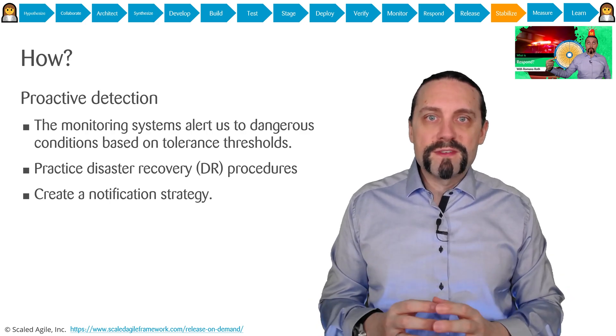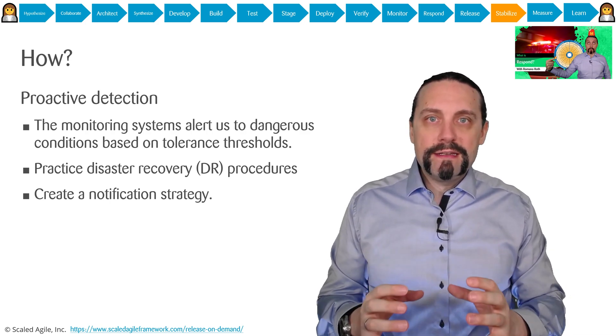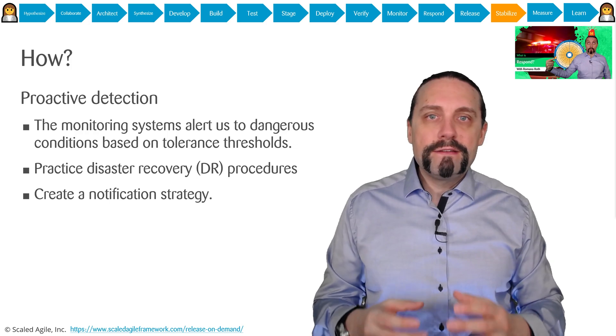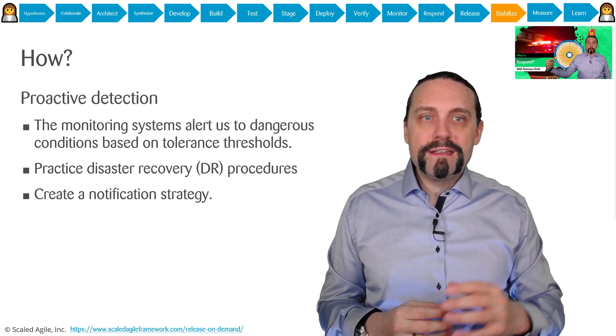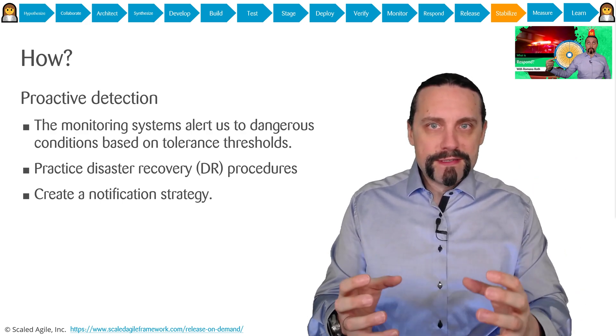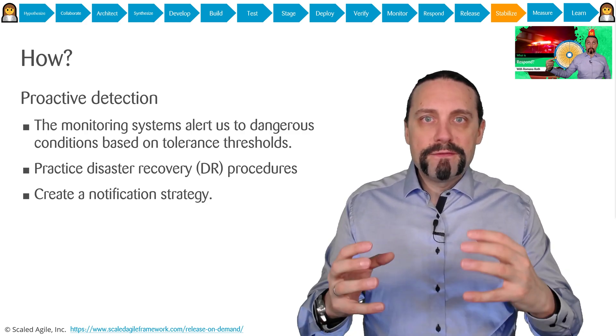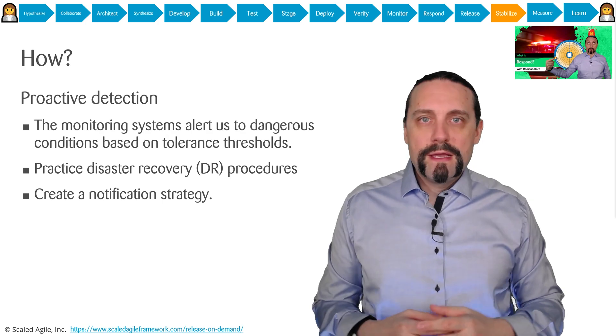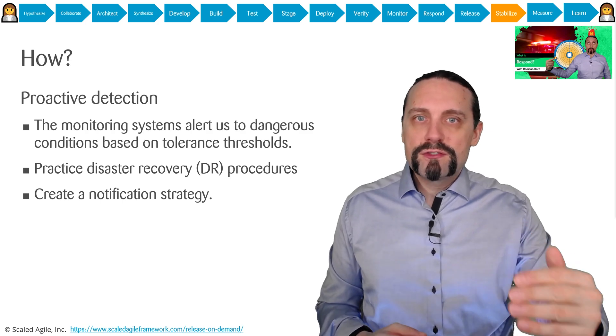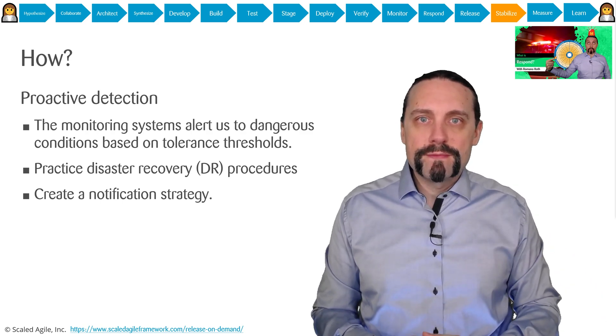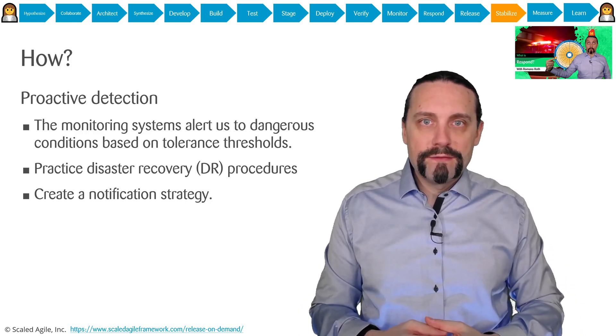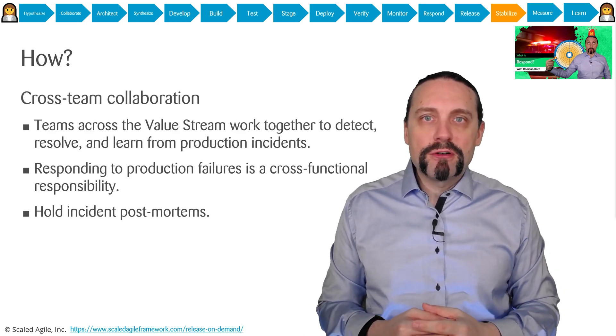Because problems will occur in production, it is essential that we proactively detect them. I have created a whole video on the respond activity which you can see up here. When we have architected our system for operability, we have a monitoring system in place. Based on the data in the monitoring system, we can create alerts on thresholds which are dangerous. If such a threshold is reached, we get notified, and with that the cross-team collaboration starts.